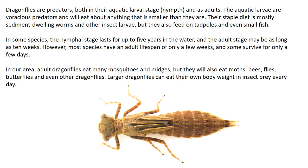Once the dragonfly eggs are fertilized and laid in the water, they hatch into the larval stage — the nymph. The larvae are very predatory and will live in the water for up to five years, mostly eating sediment-dwelling worms, but they'll grab a small fish or tadpole if they can. When it's time to emerge, they crawl out of the water onto vegetation like a tule, split right down a line, and the mature dragonfly crawls out, dries off, and flies away.